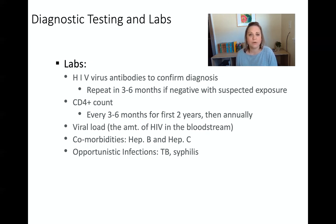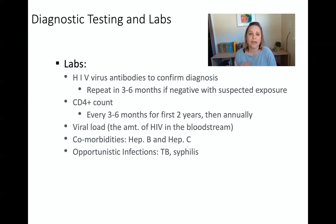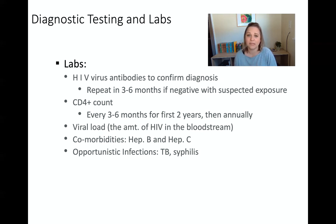We can also check the viral load — how much HIV virus is floating around in the bloodstream. We're also going to test patients with HIV for other comorbidities like hepatitis B and hepatitis C. Oftentimes, patients infected with HIV also have hep B or hep C, because those two often go together.